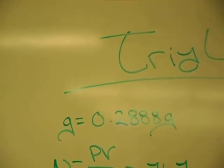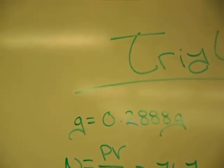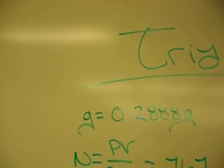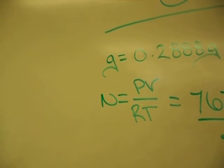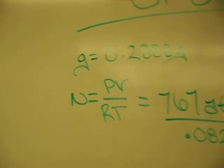To find the molecular mass, we need to find moles. Moles equals the pressure times the volume over the constant times the temperature, as shown here.